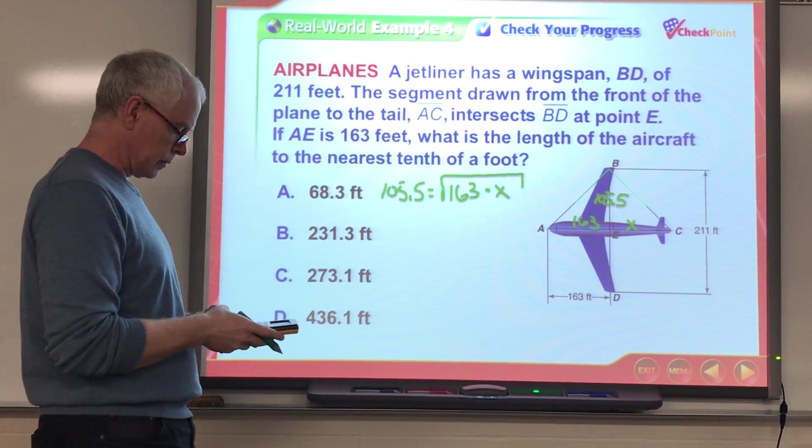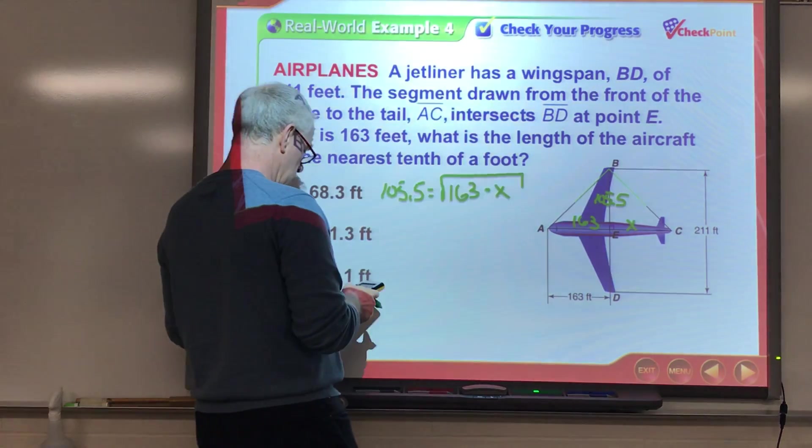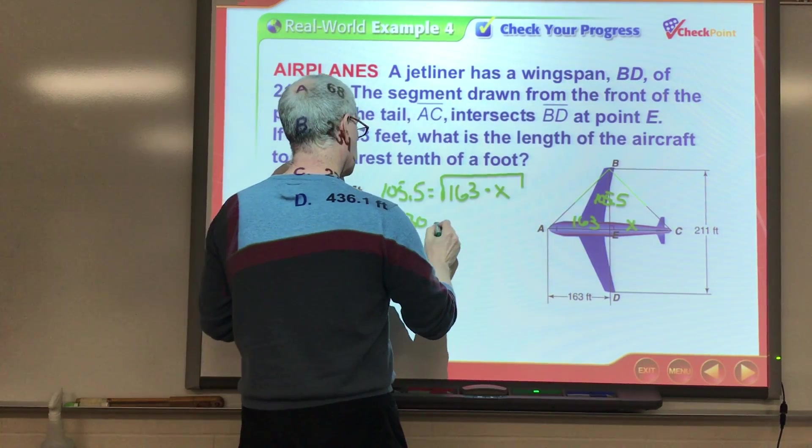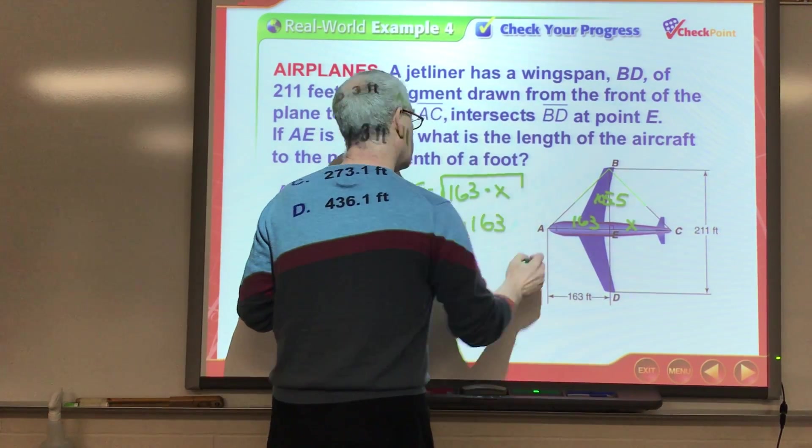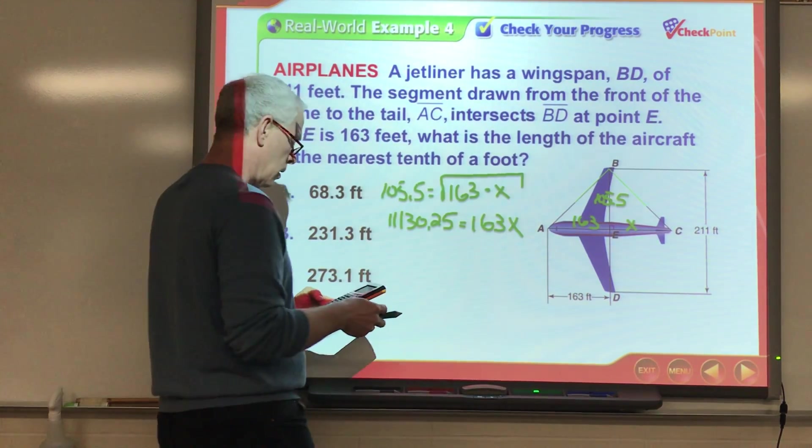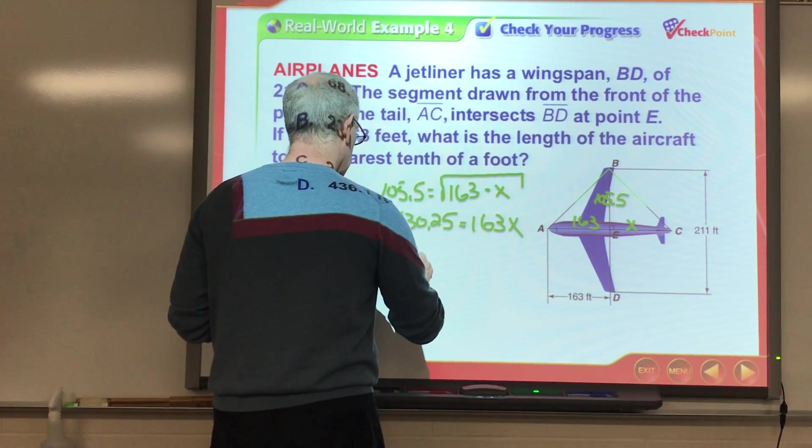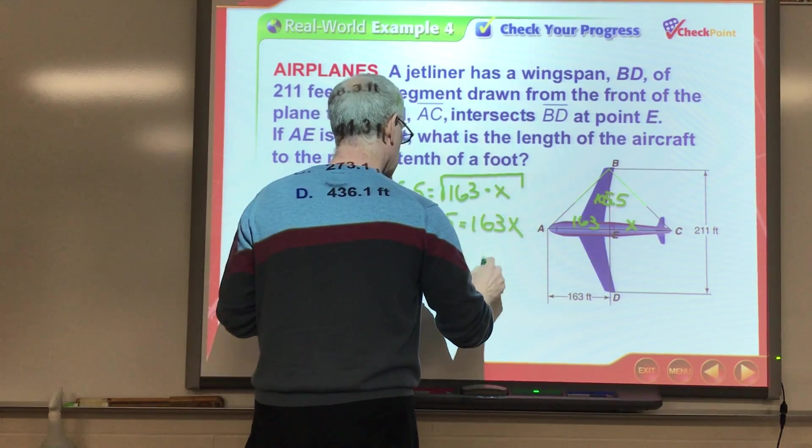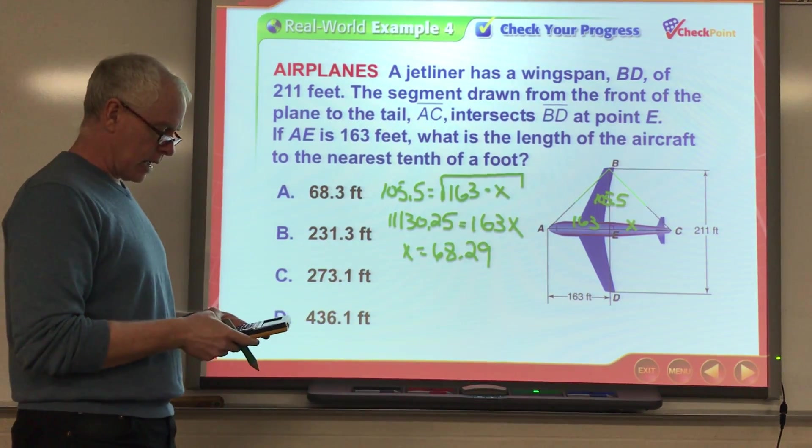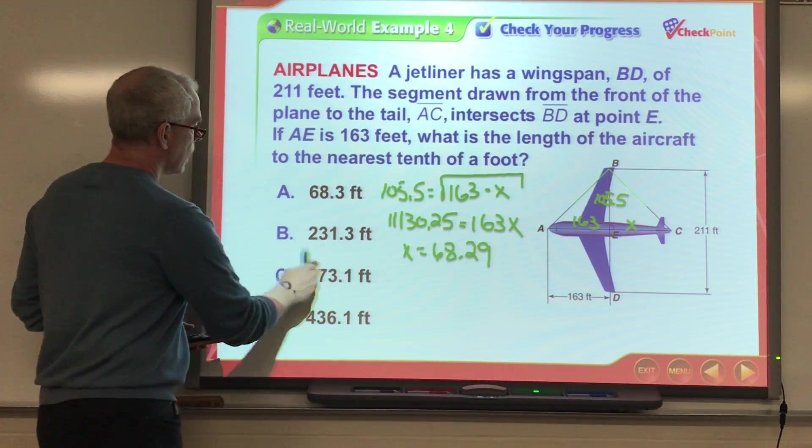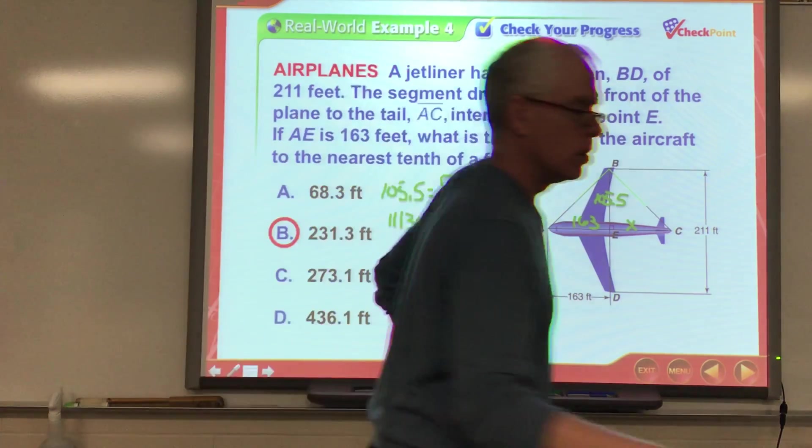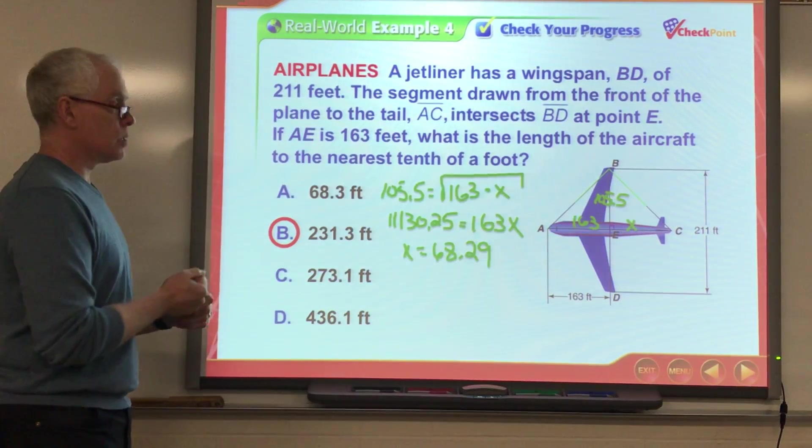That altitude's the geometric mean of the two parts of the hypotenuse. So, now, I'm going to square both sides. And so, I get... Then I have to divide by 163. Okay. Okay. But that's just this X, you guys. Okay. If I want the whole length of the plane, I have to then add that 163 back in. I get 231.3 when it's all said and done. Okay. So, know your formulas. Know those three geometric mean formulas.